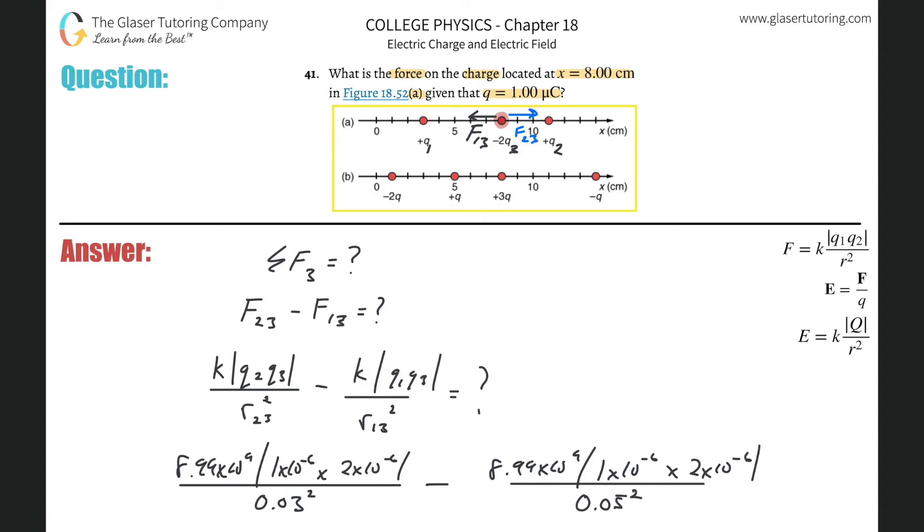And voila, calculator time. So 8.99 times 10 to the ninth times 1 times 10 to the minus 6 times 2 times 10 to the minus 6 divided by 0.03 squared. And then minus now, 8.99 times 10 to the ninth times 1 times 10 to the minus 6 times 2 times 10 to the minus 6 divided by 0.05 squared.